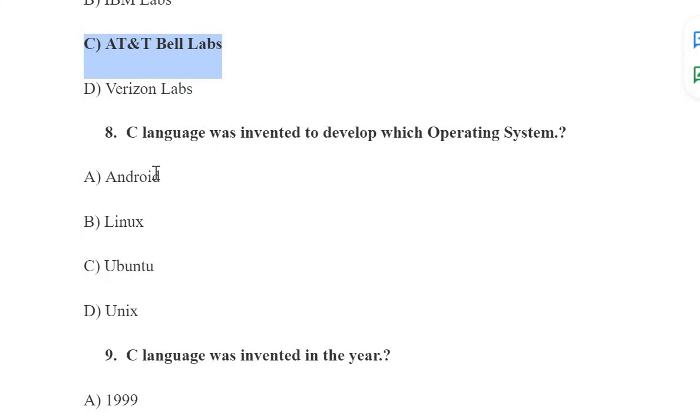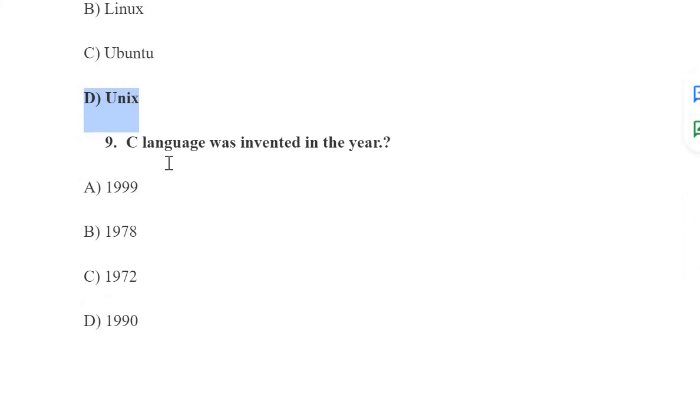C language was invented to develop which operating system? Android, no. Linux, no. Ubuntu, no. Unix is the correct answer. C language was invented in the year 1972, which is the correct answer.